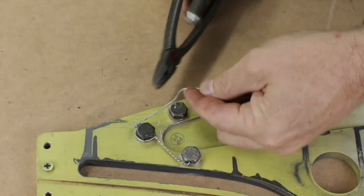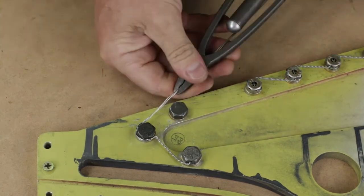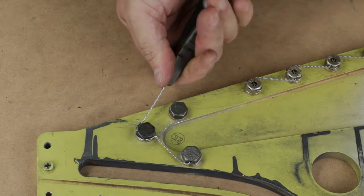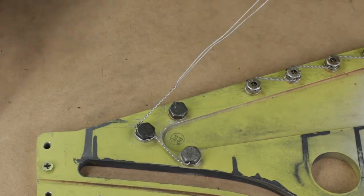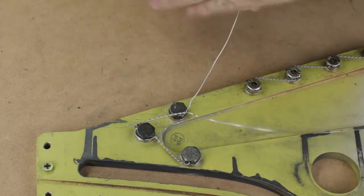Put a little nick in it with my thumb, grab it with the pliers and again we're aiming for 8 to 10 turns per inch. And now we're going to thread through the last hole to finish the job off.